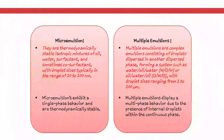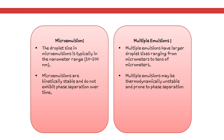Multiple emulsions are comparatively less stable than micro emulsions. Regarding droplet size, micro emulsions are typically in the nanometer range, ideally between 10 to 100 nanometers, whereas multiple emulsions have larger droplet sizes ranging from micrometers to tens of micrometers. Micro emulsions are kinetically stable and do not exhibit phase separation over time, however multiple emulsions may be thermodynamically unstable and prone to phase separation on storage.